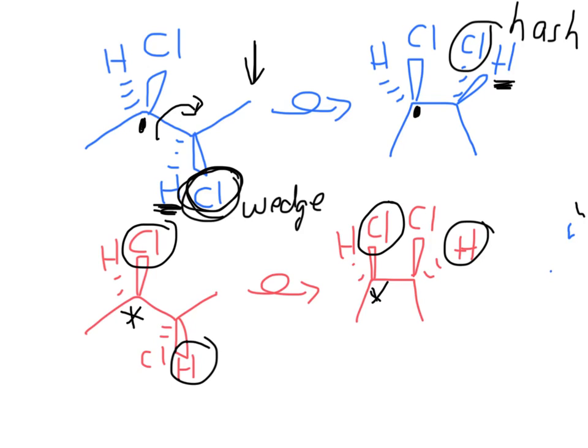For the second carbon, notice that each of the three attachments to it get reversed. The methyl group that was zigzagged up gets eclipsed down — that's a 180-degree flip — so the wedge that was in front ends up hashed behind. That's the hydrogen. And the chlorine that was hashed behind ends up spinning 180 degrees and ends up being wedged in front.